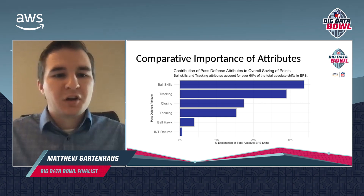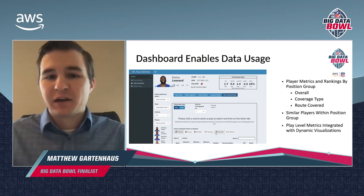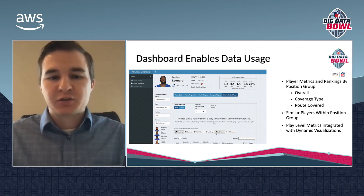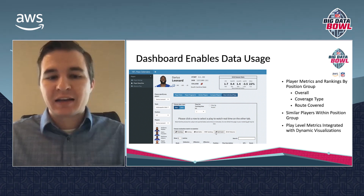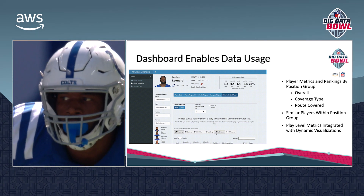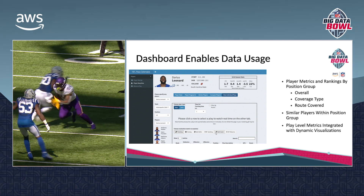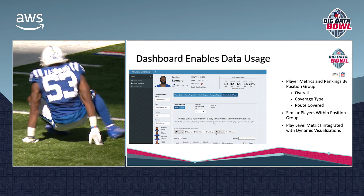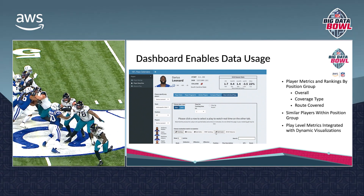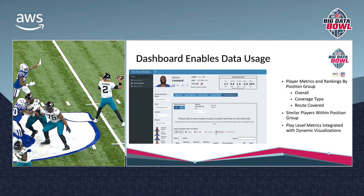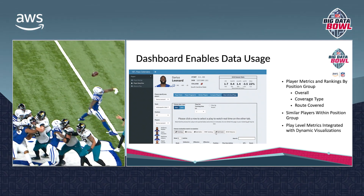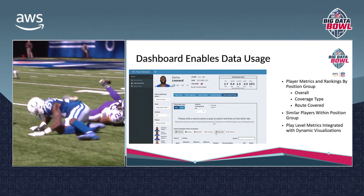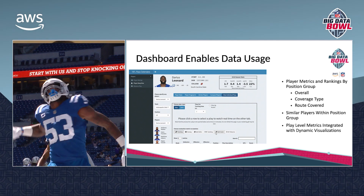An advantage of developing metrics that have play-level scoring is we're able to view different cuts of the data. Leveraging a dashboard we built in Shiny, we can see how players rate not just holistically but also look at specifics down to the coverage type and specific routes they may be covering. By displaying the data in this manner, teams are able to gain a better overall view of a player and deep dive into particular scenarios or even individual plays to understand what makes a player effective or ineffective.